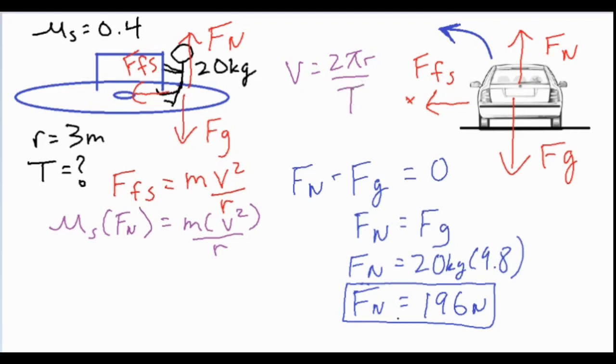Which is basically a distance over time calculation, because 2πr is going to be the circumference of the circle divided by the time, the capital T, the time it takes to complete that circle. So let's go ahead and plug in some values. We know that mu is 0.4, normal force is 196, mass is 20.